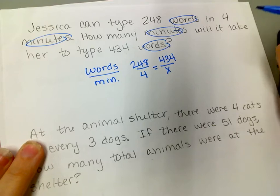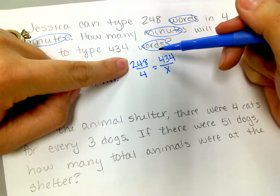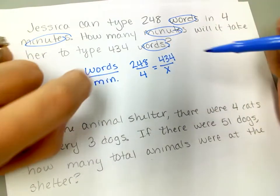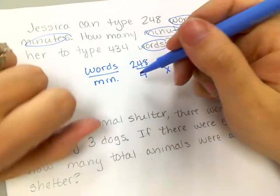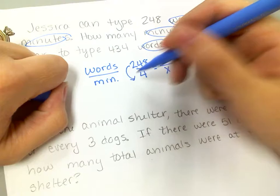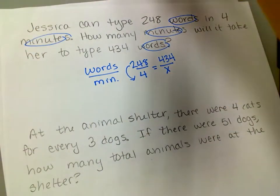Okay, so I could say, what am I doing from here to here, and try to divide, but that doesn't look easy. I could try to do cross products, but then I'd end up dividing by 248, so that doesn't look easy. But I could say, well, what am I doing from here to here, right? So let's do 248 divided by 4.